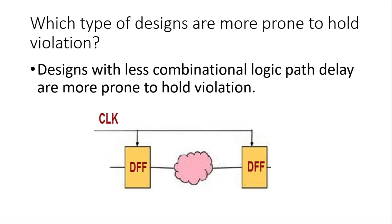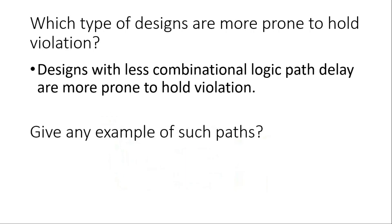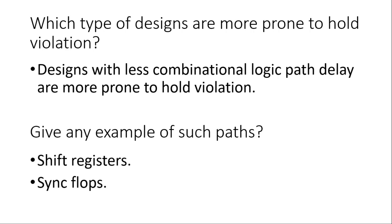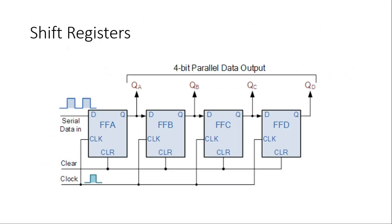The next question asks for an example of paths where chances of hold violation are quite high. The answer is shift registers and synchronizer flops. In a four-bit shift register, if you look at the register-to-register paths, there is no combinational logic path delay, so their implementation is very critical. That is why in FPGAs, these shift registers are readily available as hard-coded components.